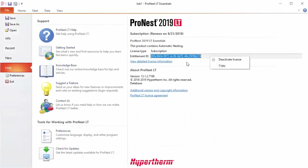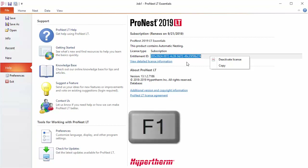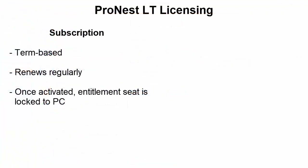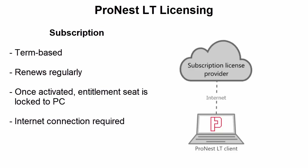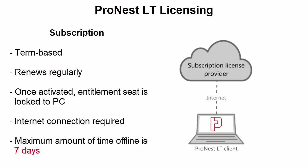For more information on subscription licensing, please refer to the ProNest Help — accessible by pressing F1 in the software — or search the knowledge base. An important note: an internet connection is required both to activate and to use the software. As long as your license is active and not expired, the maximum time you can use the software without an internet connection is seven days. After that, the program needs to connect to the cloud to authenticate. If ProNest LT is on a computer with limited internet access, connect it at least once every seven days.